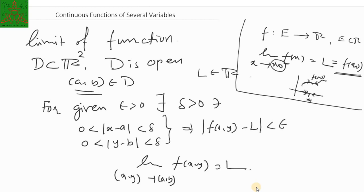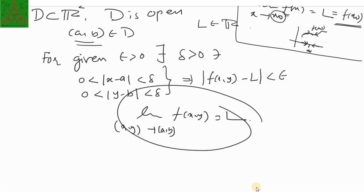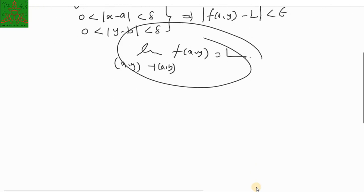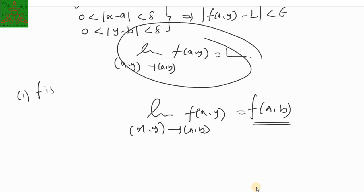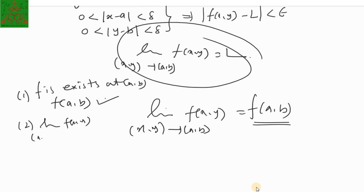We can copy that same idea for functions of two variables. We say the limit of f(x,y) equals f(a,b) as (x,y) tends to (a,b), and then f is continuous at point (a,b). For this, three conditions must be satisfied: first, f(a,b) must exist; second, the limit of f(x,y) as (x,y) tends to (a,b) must exist; and third, the limit must equal f(a,b).